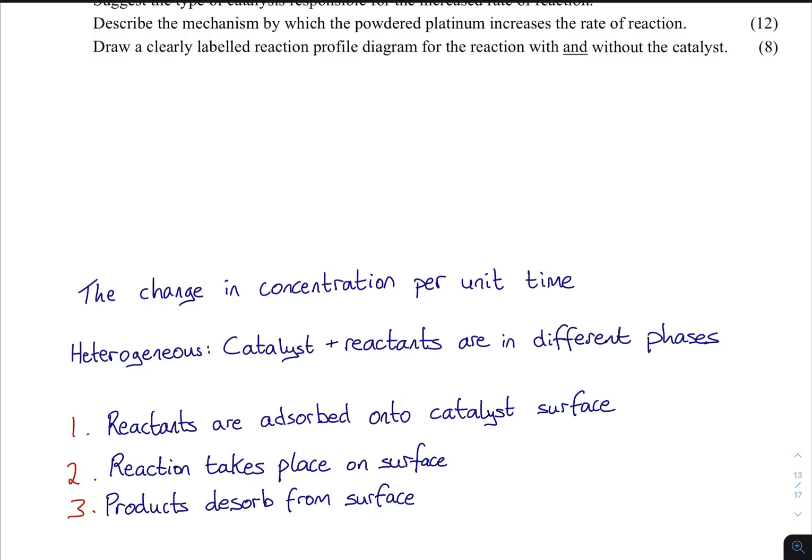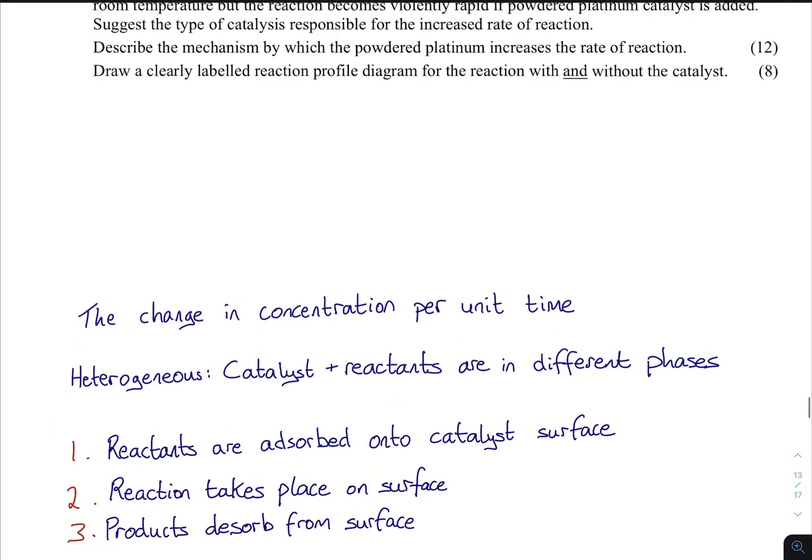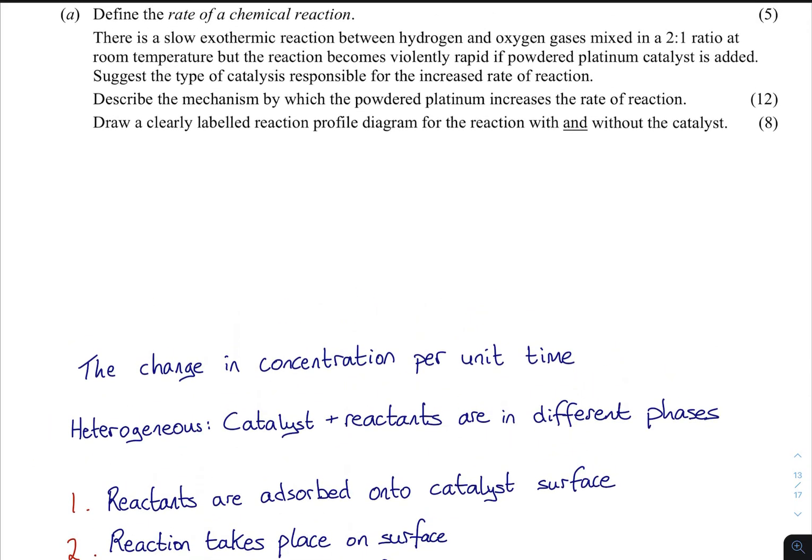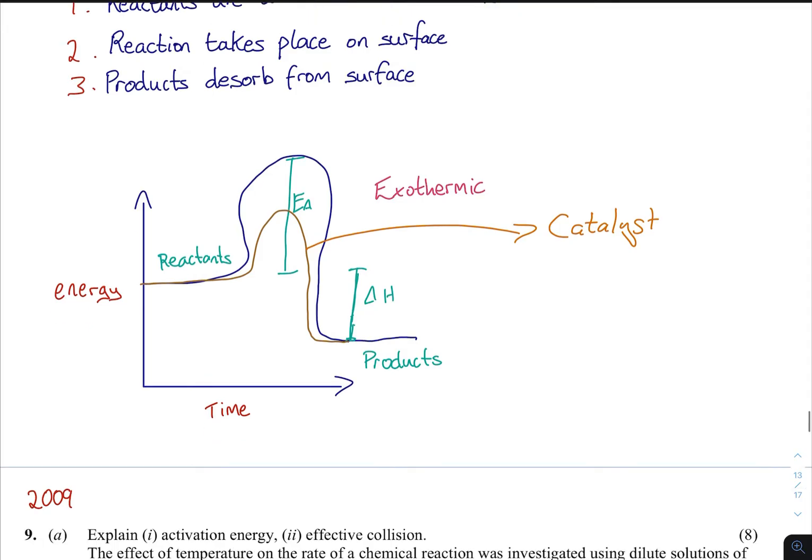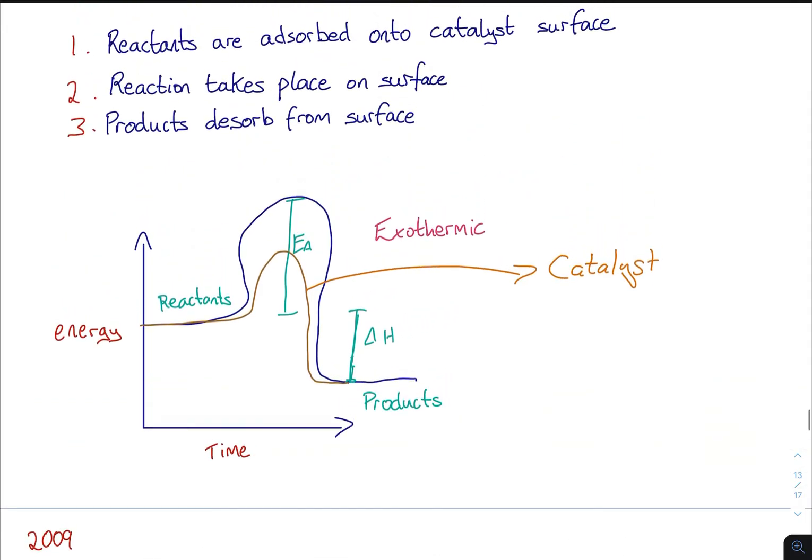Describe the mechanism by which the powdered platinum increases the rate of reaction. Anytime a mechanism comes up: reactants are adsorbed onto the catalyst surface, the reaction takes place on the surface, the products desorb from the surface. As soon as you see a mechanism, this is what you should be thinking of. Three points, that's it.